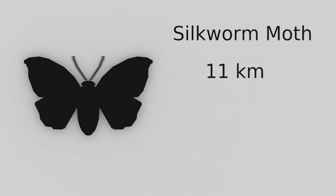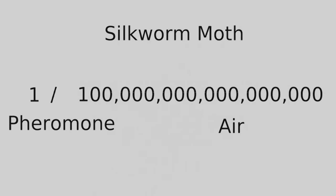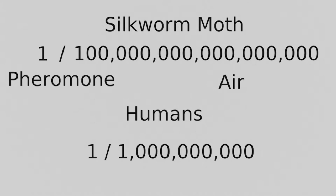How about this? A silkworm moth can detect pheromones up to 11 kilometers away from their source. Not only that, they can detect one molecule of pheromone in 100 quadrillion molecules of air. That's 17 zeros. For comparison, humans can detect about 1 in several billion concentration. That's only 9 zeros.